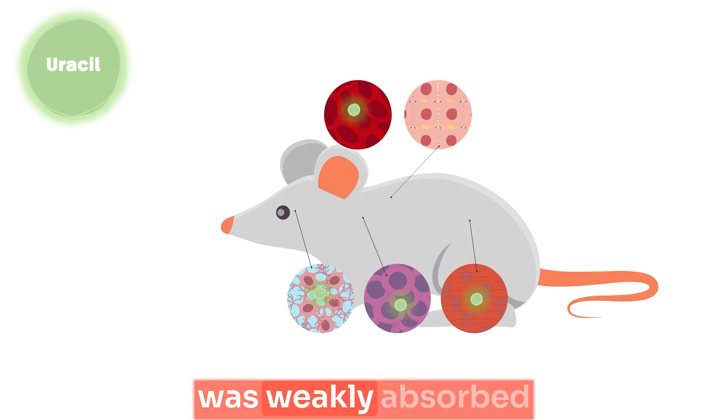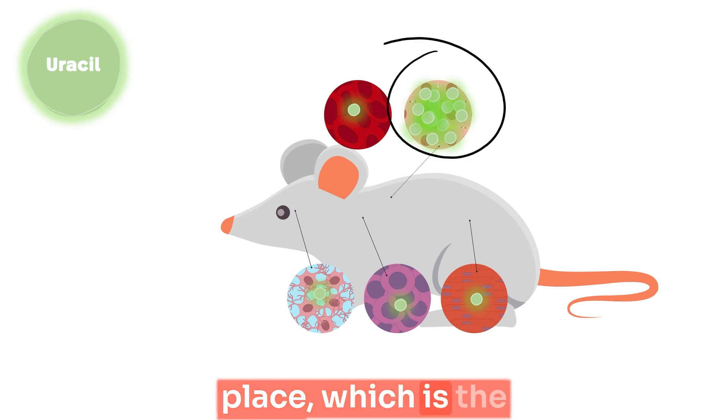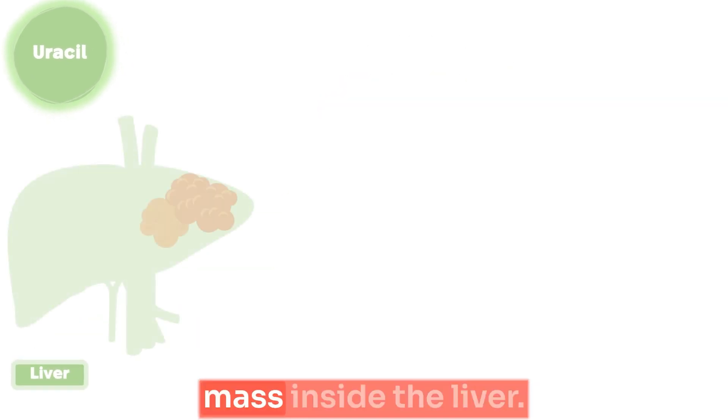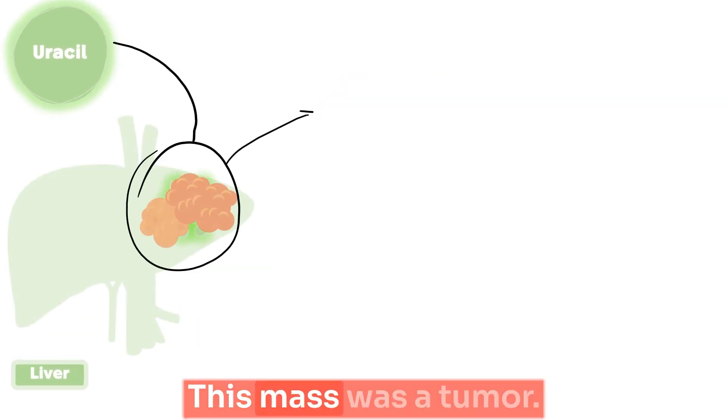They found that uracil was weakly absorbed in mouse tissue, except in only one place, which is the liver, specifically a mass inside the liver. This mass was a tumor.